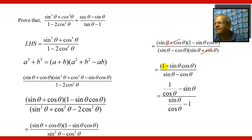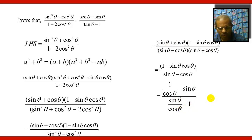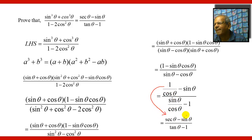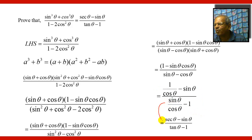Now, dividing numerator and denominator by cosθ: in the numerator, 1/cosθ − sinθ/cosθ gives secθ − sinθ. In the denominator, sinθ/cosθ − 1 gives tanθ − 1. Therefore you get secθ minus sinθ upon tanθ minus 1, which is exactly what we had to prove.